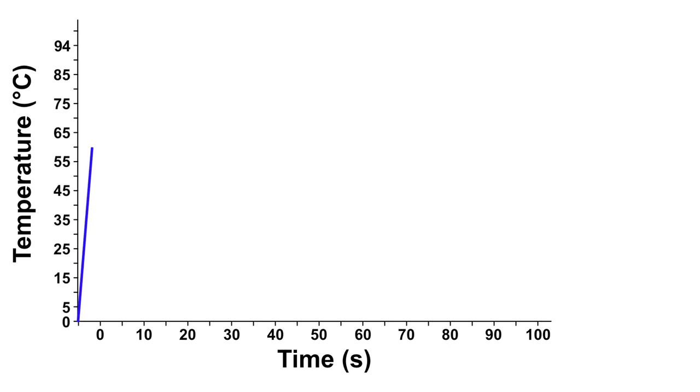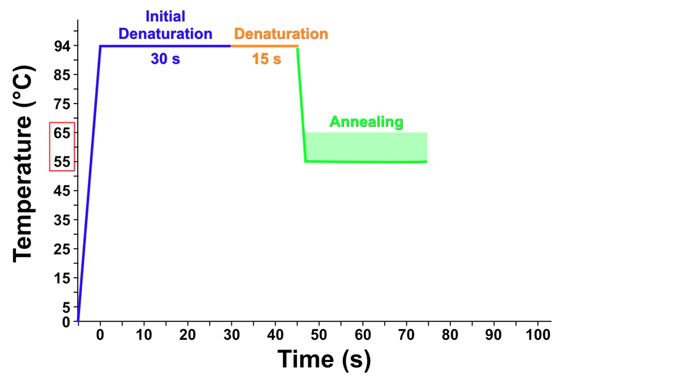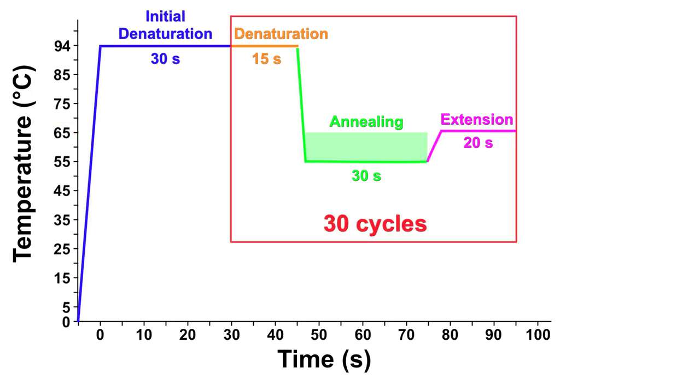For a routine three-step PCR, there should be one initial denaturation step at 94 degrees Celsius for 30 seconds, followed by 30 cycles of 94 degrees Celsius denaturation for 15 seconds, 55 to 65 degrees Celsius annealing for 30 seconds, and a 65 degrees Celsius extension for 20 seconds, or 50 seconds per KB. This should be followed by one final extension at 65 degrees Celsius for 5 minutes.